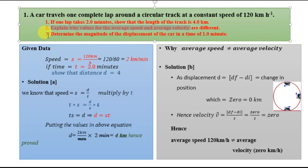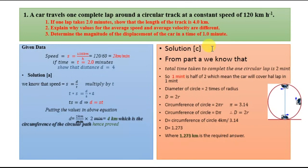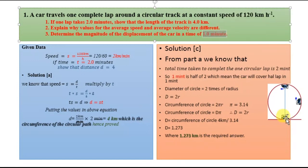Now we proceed to part C: determine the magnitude of the displacement of the car in a time of one minute. This part is a little tricky but keep in mind the initial parameters. From part A we know the speed is two kilometers per minute and the time to complete the whole lap is two minutes. In this case we are dealing with one minute.